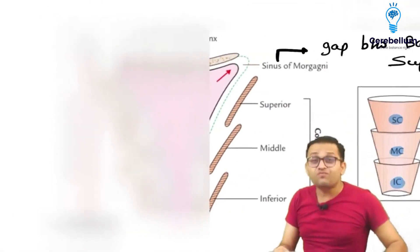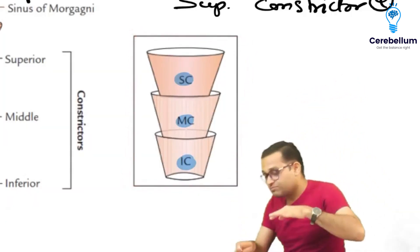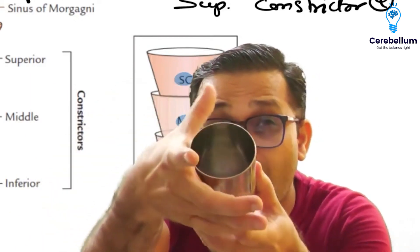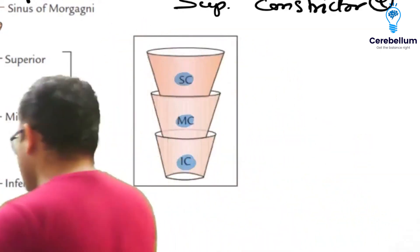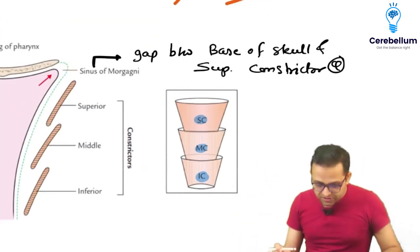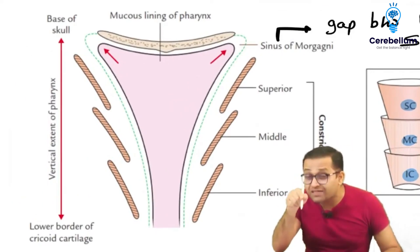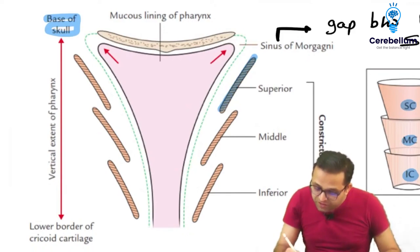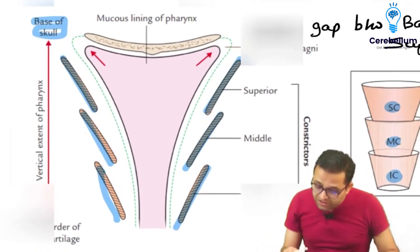Now, when we cut the constrictor muscles in this plane, try to understand — suppose this is one constrictor, and it is rounded. When it contracts it closes. When we cut it this way, it will appear longitudinal in section. So when you cut, you will see the superior constrictor, then the middle constrictor, and then the inferior constrictor — that's how the diagram will look.